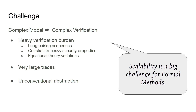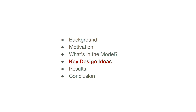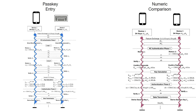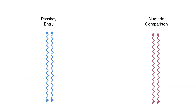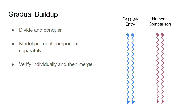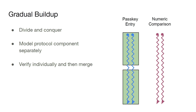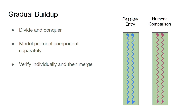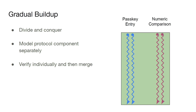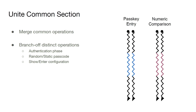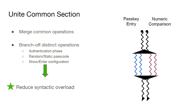Scalability is a very big challenge for formal methods. With our key design ideas, we manage this scalability starting from the long pairing sequences. Considering each pairing process as an exchange between initiator and responder — the blue thread representing passkey entry, the red thread representing numeric comparison — we use a divide-and-conquer approach where we model different components of individual protocols, verify them separately for both pairing processes, then merge the verified components, and finally merge both pairing processes together. Since some phases share similar calculations, we merge those into one template and branch off distinct operations, reducing syntactic overload.